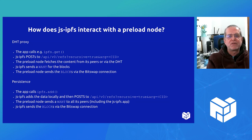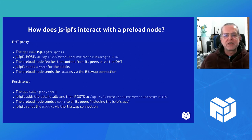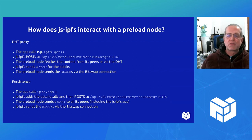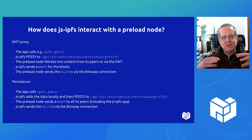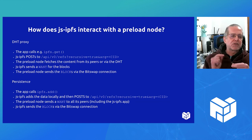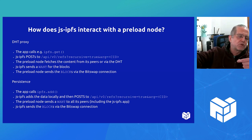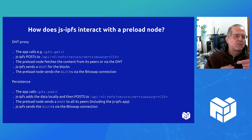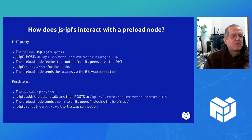I dove into how this works. For proxying the DHT, the application will call — for example a get — and JSIPFS will make a POST and request the refs recursively. It does a recursive get. Then the preload node will fetch the content, and then JSIPFS will send a want over the BitSwap channel, and the preload node will send the blocks back.